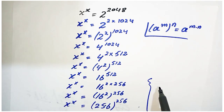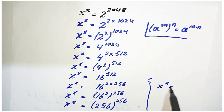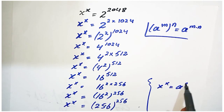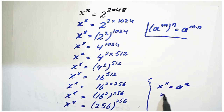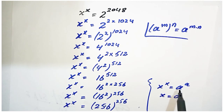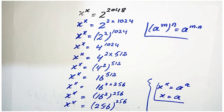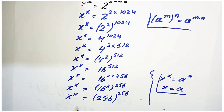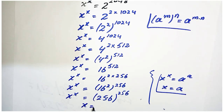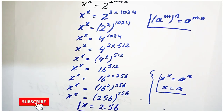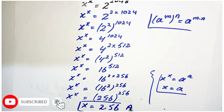We have the rule: if x^x = a^a with the same base and same power, then x = a. Applying this rule here, our answer is x = 256.